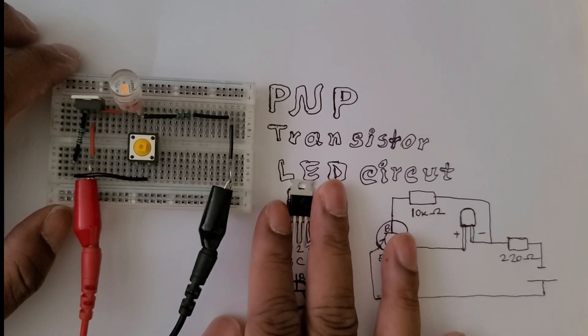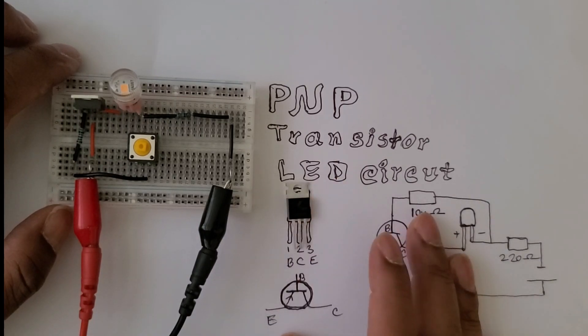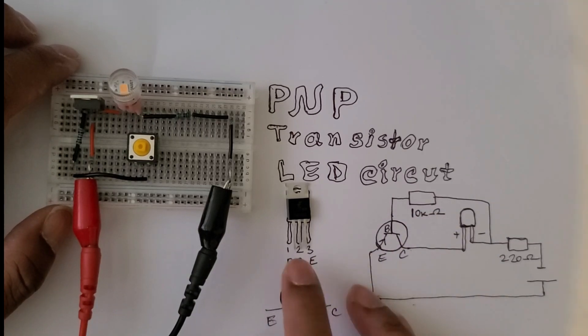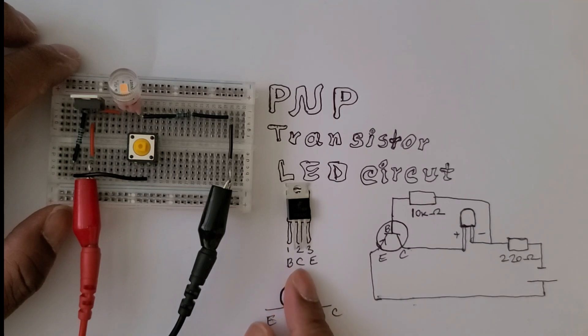Before starting, let's familiarize with the three pins it has. The first one is the base, second one is the collector, and third one is the emitter.